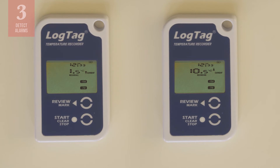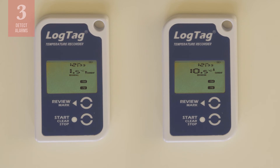Remember that an alarm does not go off automatically when temperatures go out of range. You might see a display like one of these with temperatures above 8 degrees Celsius or below 2 degrees Celsius, but without an alarm. The alarm is not triggered until the temperature is above 8 degrees Celsius for 10 consecutive hours or below negative 0.5 degrees Celsius for 60 minutes. If you saw one of these displays on your log tag, you know that temperatures have not been out of range long enough to trigger the alarm.